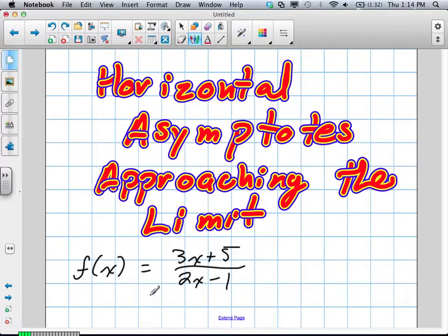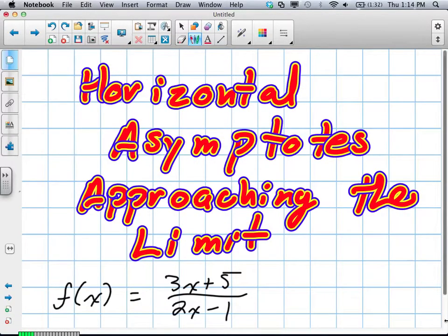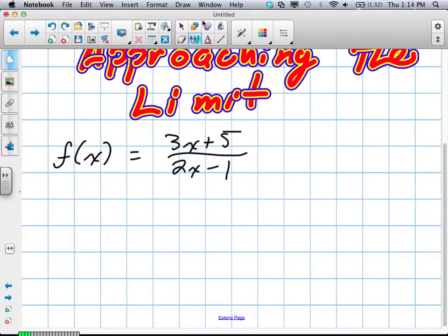Now, in this question, what we're going to do is we're again going to factor it because we're trying to find a horizontal asymptote. So we're going to factor out our greatest term on the top and bottom of the fraction.